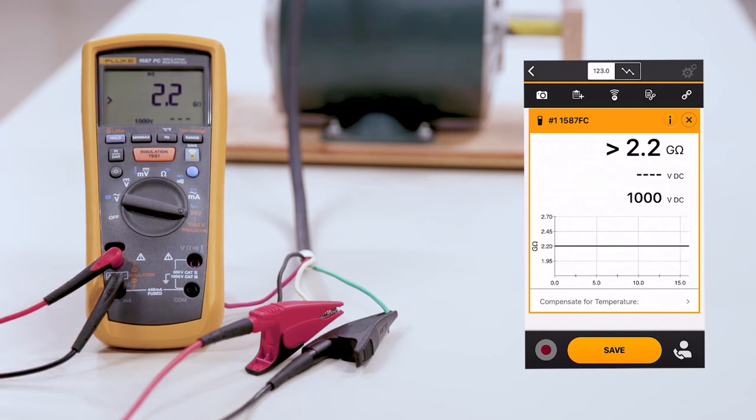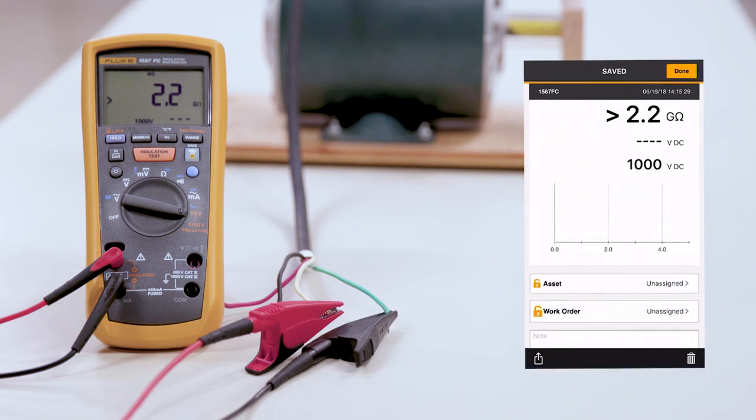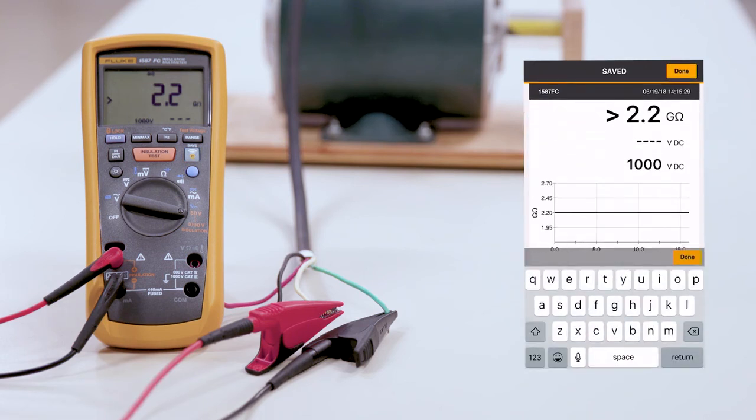And we're going to save the last test and identify it in our notes as this was the white leg. By hitting Done, we're done.